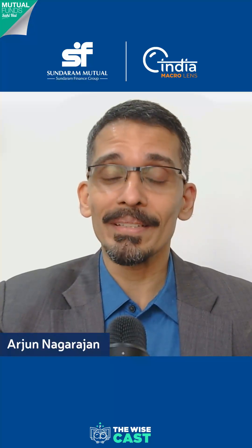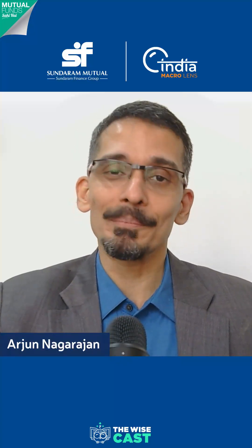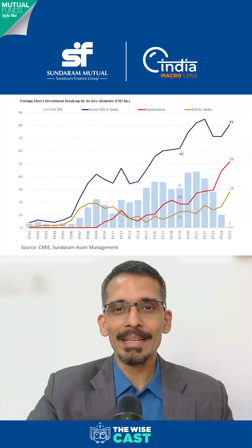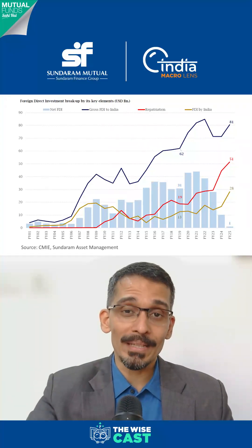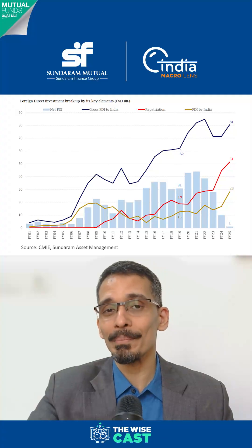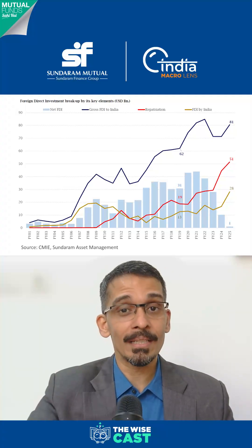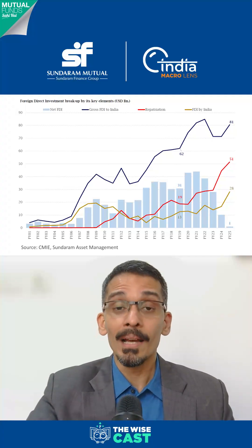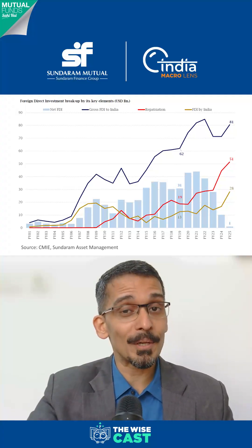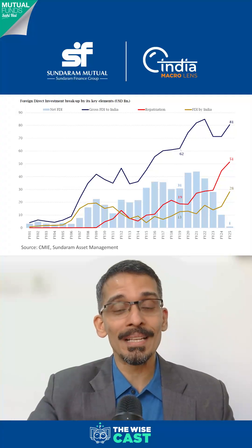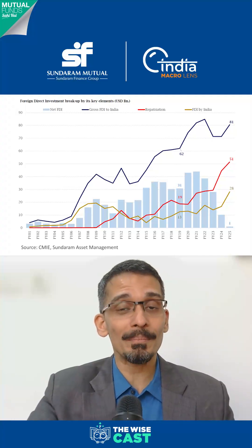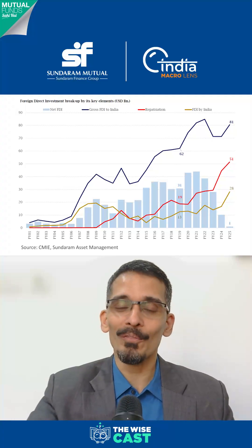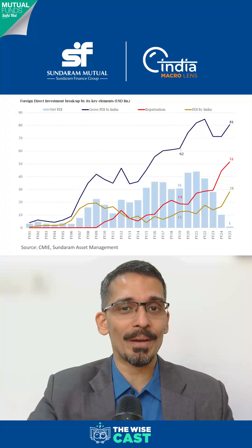Why are the FDI numbers so low? Let's break this down. As seen in this chart, net FDI flows into India stood just under $1 billion in FY25, down from a peak of $44 billion in FY21. However, remember that gross FDI inflows stood at $81 billion in FY25, just 5% off its all-time high seen in FY22.